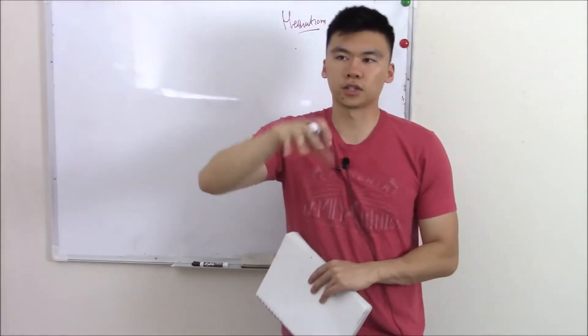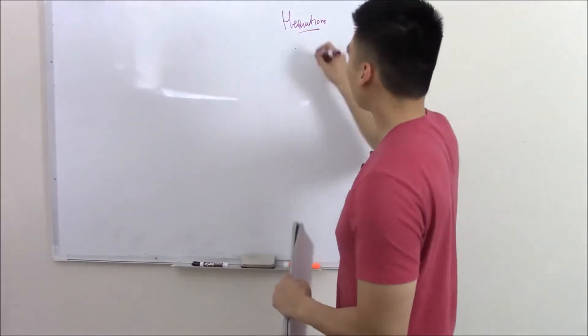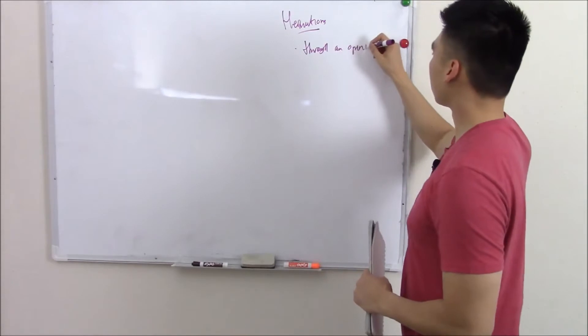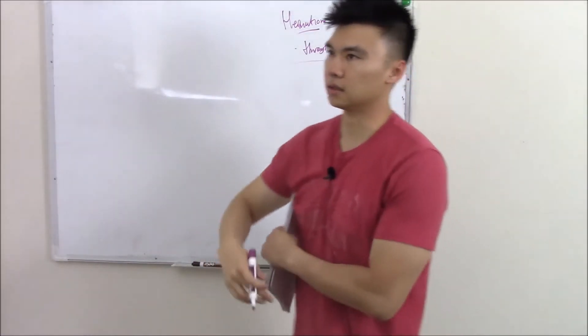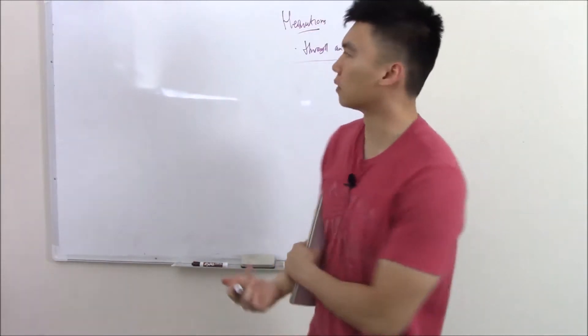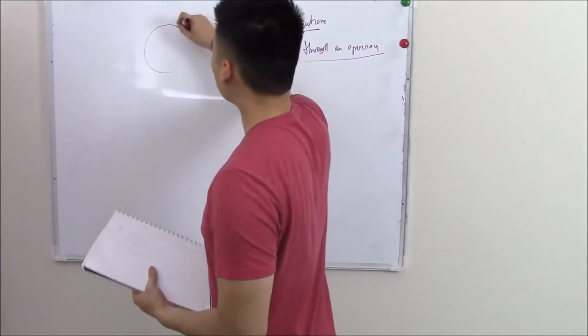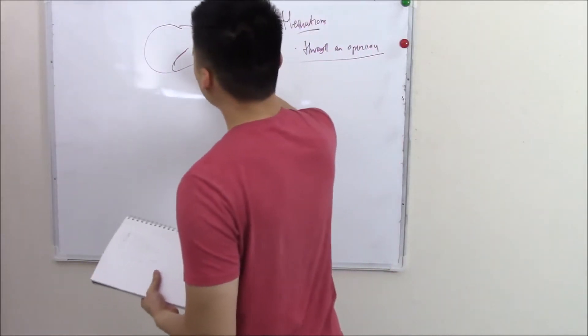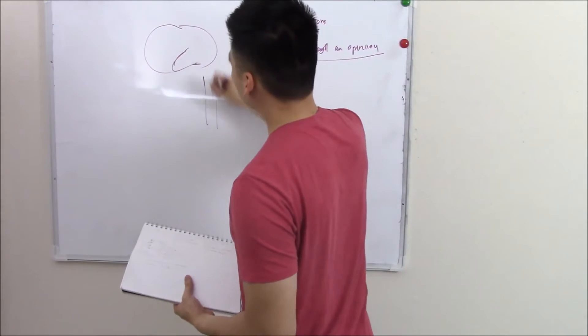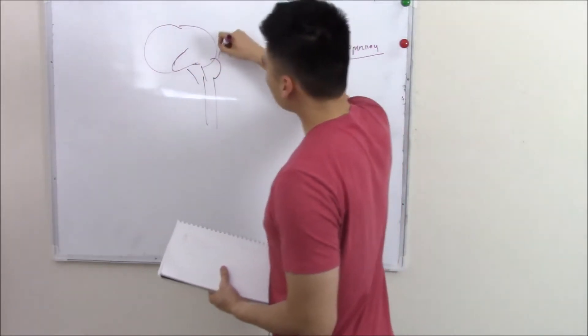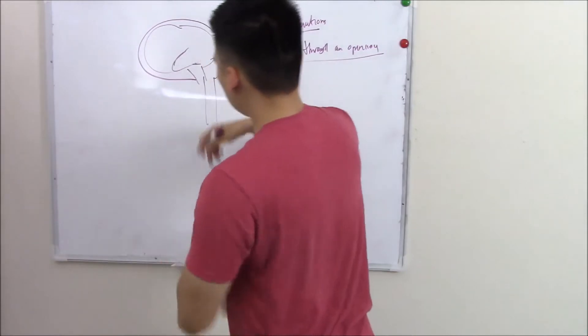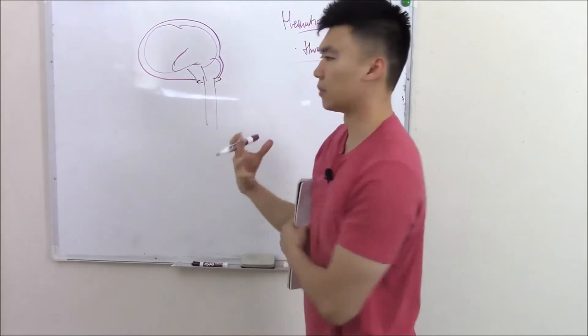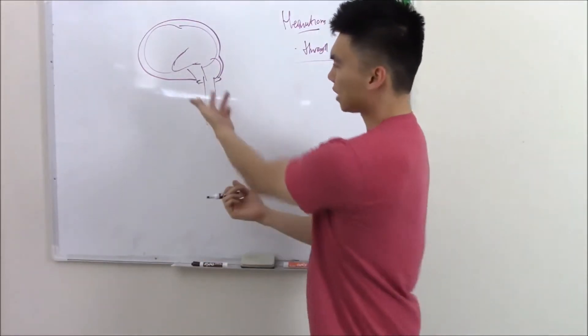Herniation means protrusion of tissue through an opening. We haven't talked a lot about openings in neuro. This is your brain with your spinal cord, brainstem, and cerebellum. You have your skull that protects your brain, and to allow passage of your spinal cord, there's an opening. We call that opening the foramen magnum. It means big opening.